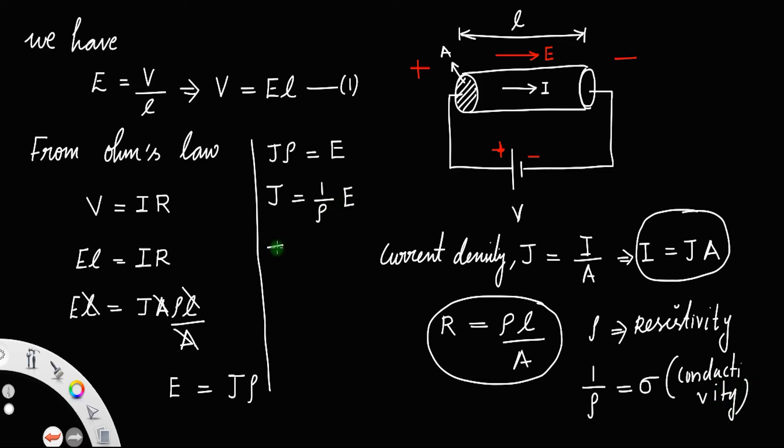So this will be J equals σE. In vector form, J, the current density, is actually a vector quantity. The electric field is also a vector, and both the current density and the electric field are along the direction of current.